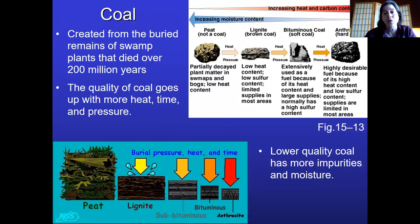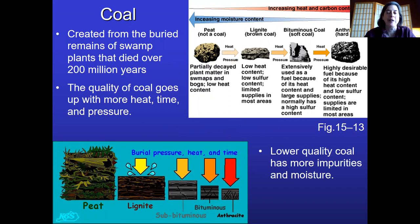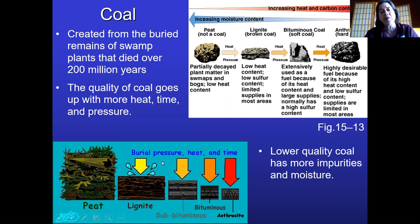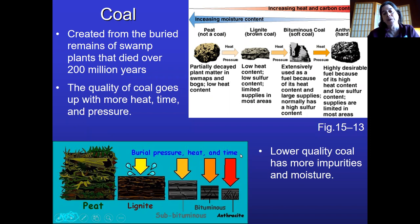Not all coal is created equal. Just like all the other fossil fuels, it comes from the buried remains of plants mostly, and some animals, going back about 200 million years. The way you create coal is you start with compressed organic matter — it begins as peat, and that's not coal yet. Over time, through burial pressure and heat, you remove other materials until you're left with mostly carbon. The longer that process goes on, the better the coal gets.